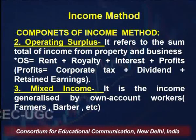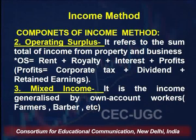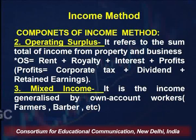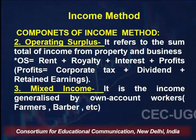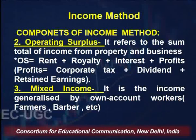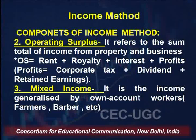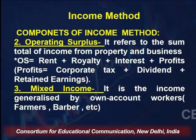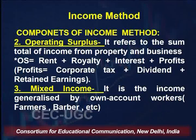The second component is operating surplus, which refers to the sum total of income from property and businesses. Operating surplus equals rent plus royalty plus interest plus profit. Profits are calculated as total profits after deducting corporate tax, dividends, and retained earnings. There is also mixed income, which is income generated by own-account workers who receive both a salary component and a profit component.